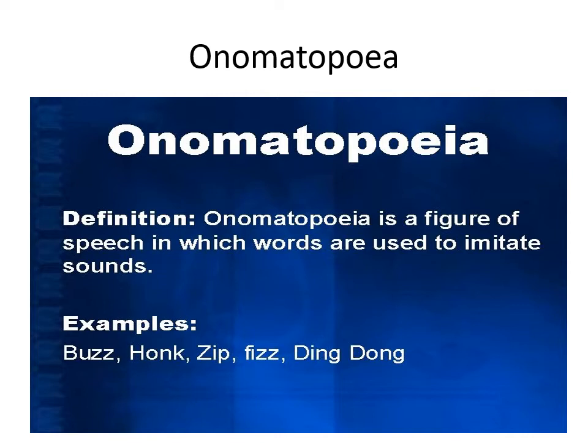Next is onomatopoeia. It is a figure of speech in which words are used to imitate sounds. Some words are used to acknowledge sounds — the chirping sound of a bird, the buzzing of bees, the honking of a horn, the zipping sound when a cycle moves, the ding-dong of a bell. Each element has a specific word for its sound. When we refer to that sound particularly, we use the figure of speech called onomatopoeia.